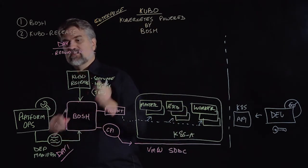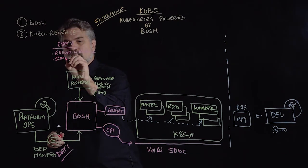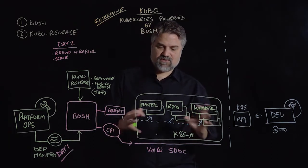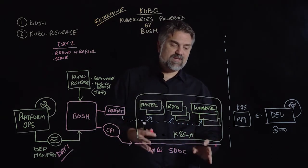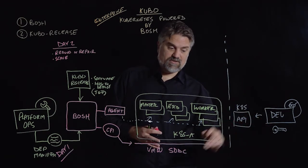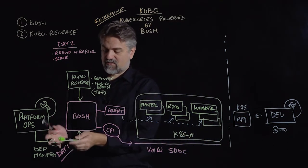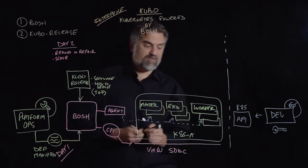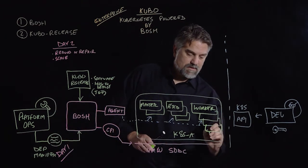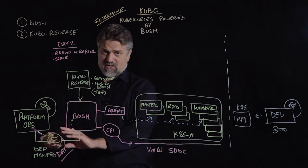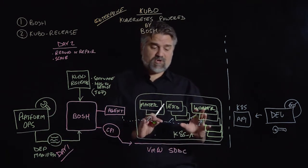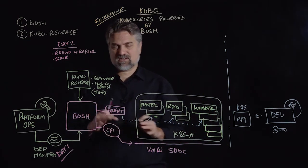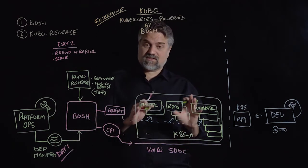Another day two operation is scale. An operator may need to scale a Kubernetes cluster up because workload demands are increasing. In that case, the platform operator could simply modify the manifest to increase the instances of workers from three to five, tell BOSH about the new manifest for that deployment, and BOSH will actually upgrade the deployment in place and scale the workers up for us. It gives us a consistent way to do scaling inside a Kubernetes cluster.